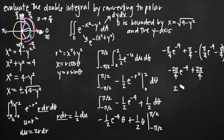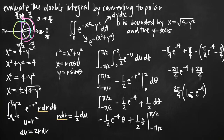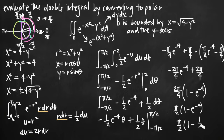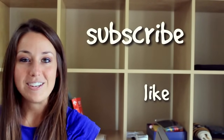Factoring out 2pi over 4, we get 2pi over 4 times (1 minus e to the negative 4), leading with the positive term. Reducing 2pi over 4 to pi over 2, our final answer is pi over 2 times (1 minus e to the negative 4). You can also write this as pi over 2 times (1 minus 1 over e to the 4) by moving the negative exponent to the denominator. Either form is acceptable as a final answer. That's how you evaluate a double integral by converting from Cartesian to polar coordinates. I hope you found that video helpful — if you did, like the video and subscribe to be notified of future videos.